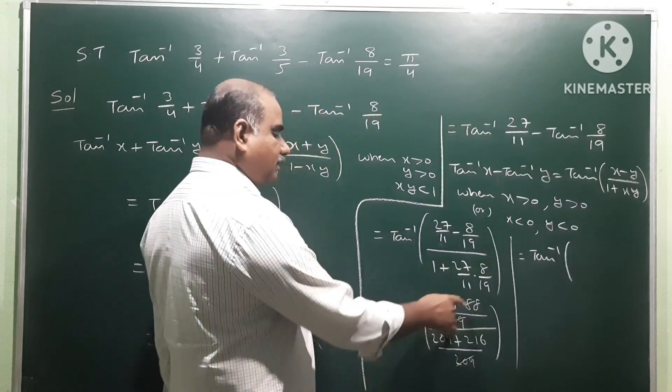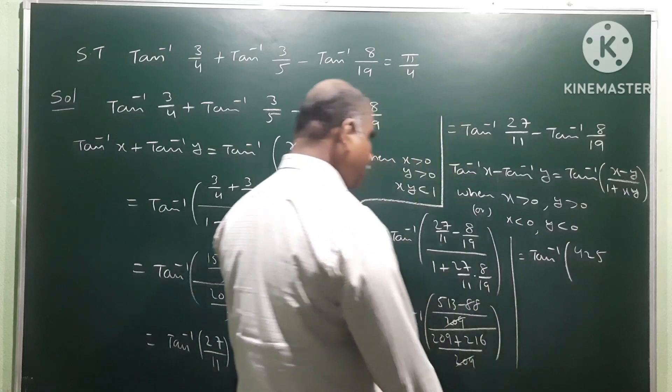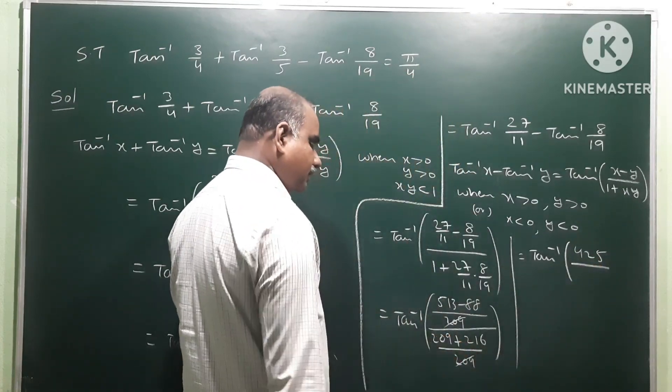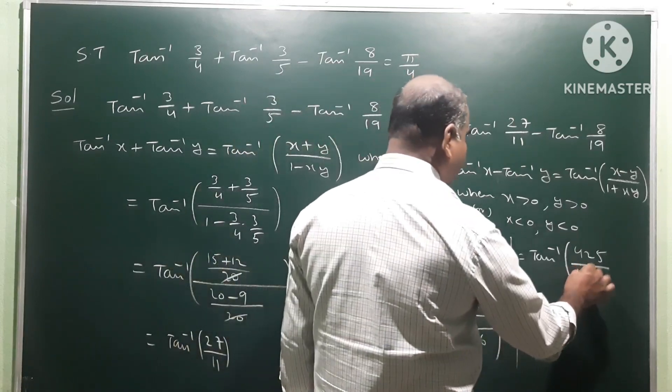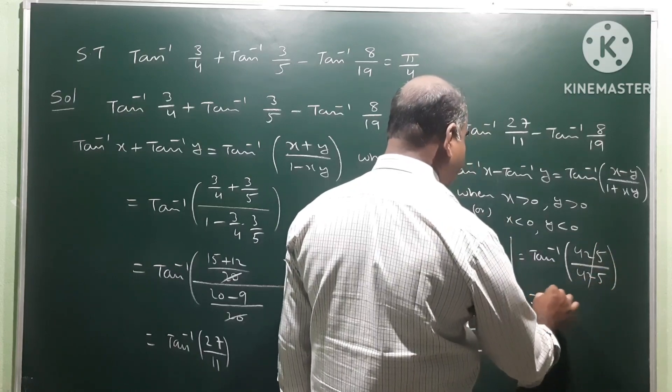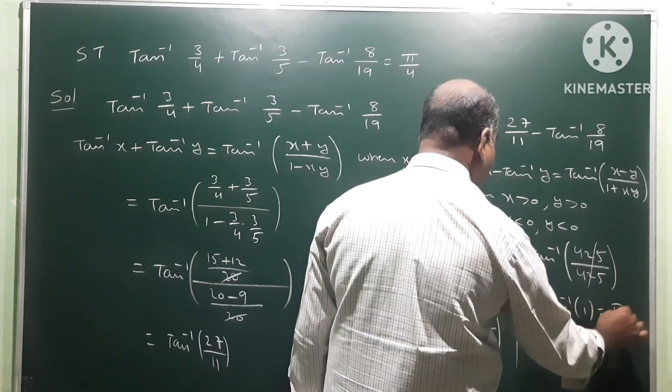513 minus 88 gives 425 by 209 plus 216, which is 425. So 425, 425 cancel. We get tan inverse 1